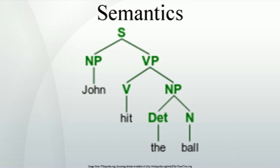Systems of categories are not objectively out there in the world but are rooted in people's experience. These categories evolve as learned concepts of the world, meaning is not an objective truth, but a subjective construct, learned from experience, and language arises out of the grounding of our conceptual systems in shared embodiment and bodily experience. A corollary of this is that the conceptual categories will not be identical for different cultures, or indeed for every individual in the same culture. This leads to another debate: see the Sapir-Whorf hypothesis or Eskimo words for snow.